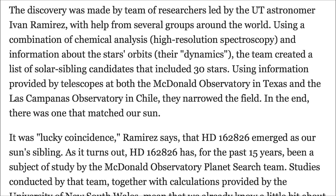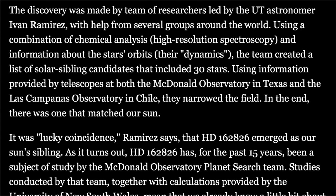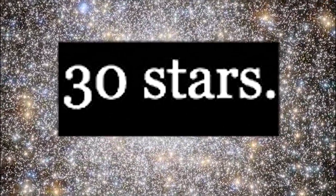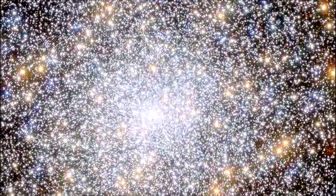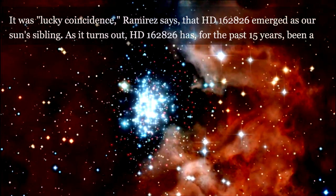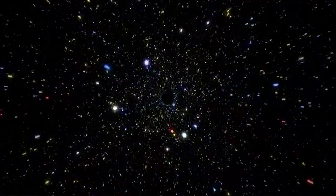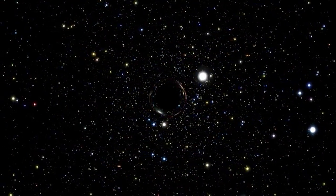The discovery was made by a team of researchers led by the UT astronomer Ivan Ramirez, with help from several groups around the world, using a combination of chemical analysis, high-resolution spectroscopy, and information about the star's orbits—their dynamics. The team created a list of solar sibling candidates that included 30 stars. Using information provided by telescopes at both the McDonald Observatory in Texas and the Las Campanas Observatory in Chile, they narrowed the field. In the end, there was one that matched our sun. It was a lucky coincidence, Ramirez said.